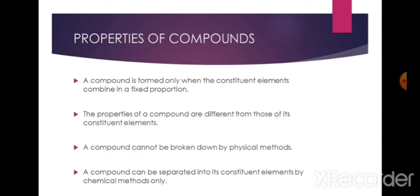Properties of compounds: a compound is formed only when the constituent elements combine in a fixed proportion. For example, H2O — to form a water molecule we need exactly two hydrogen atoms and one oxygen atom. The properties of a compound are different from those of its constituent elements.